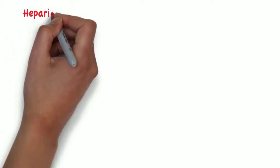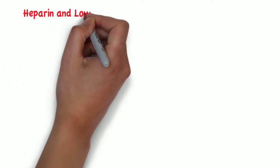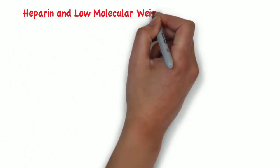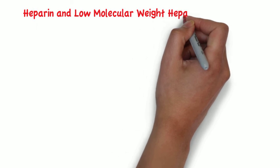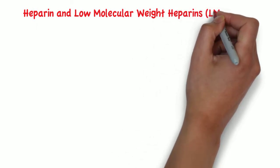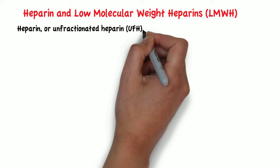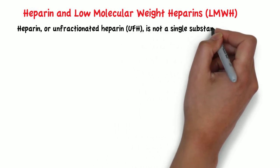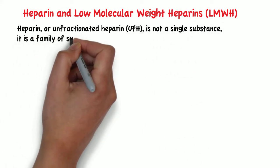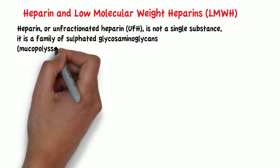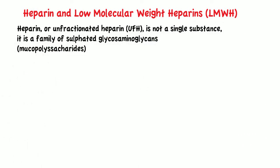The first drug we will look at is heparin and low molecular weight heparin. Heparin is not a single substance — it is a family of sulfated glycosaminoglycans, or mucopolysaccharides.